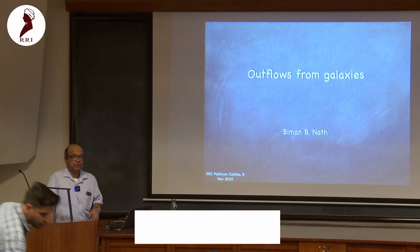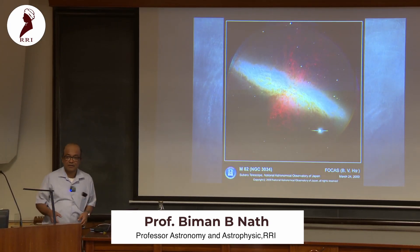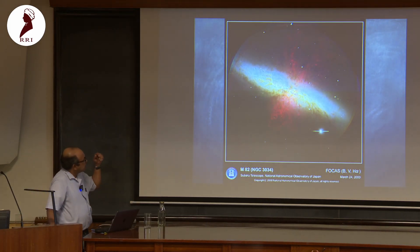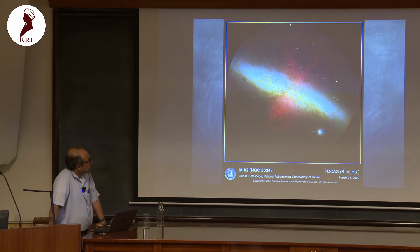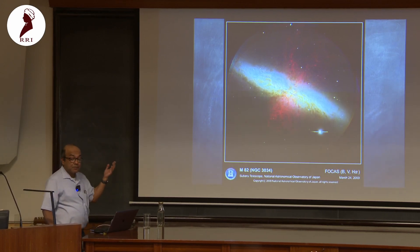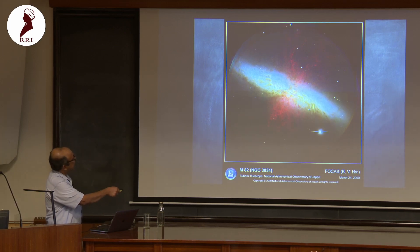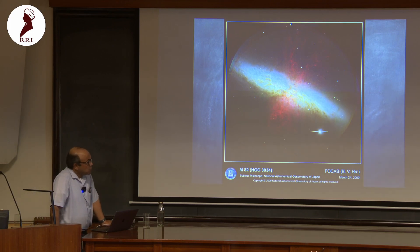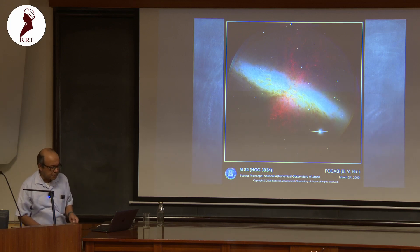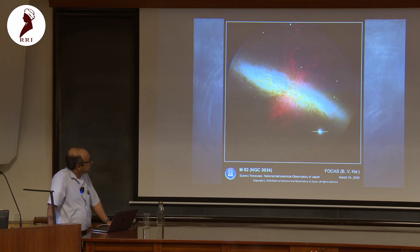I'm going to talk about some aspects of what we have been doing in our group for the last several years, about outflows from galaxies. As you can see in this iconic image of nearby galaxy M82, gas is being thrown out pretty violently. This is the plane of the galaxy, and the red color is from H-alpha radiation from hydrogen, radiated by gas at roughly around 100,000 degrees Kelvin.